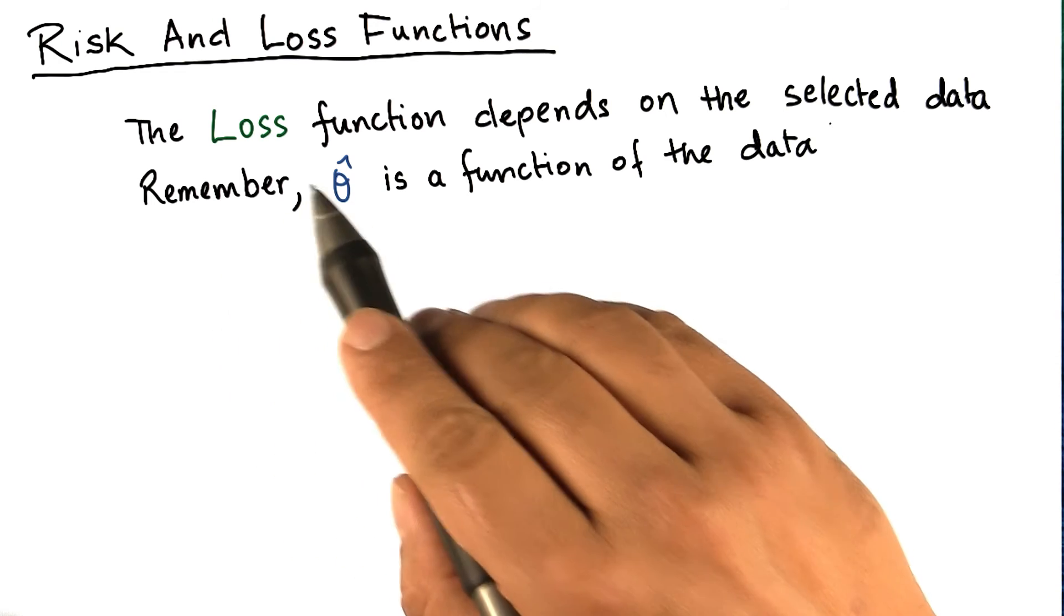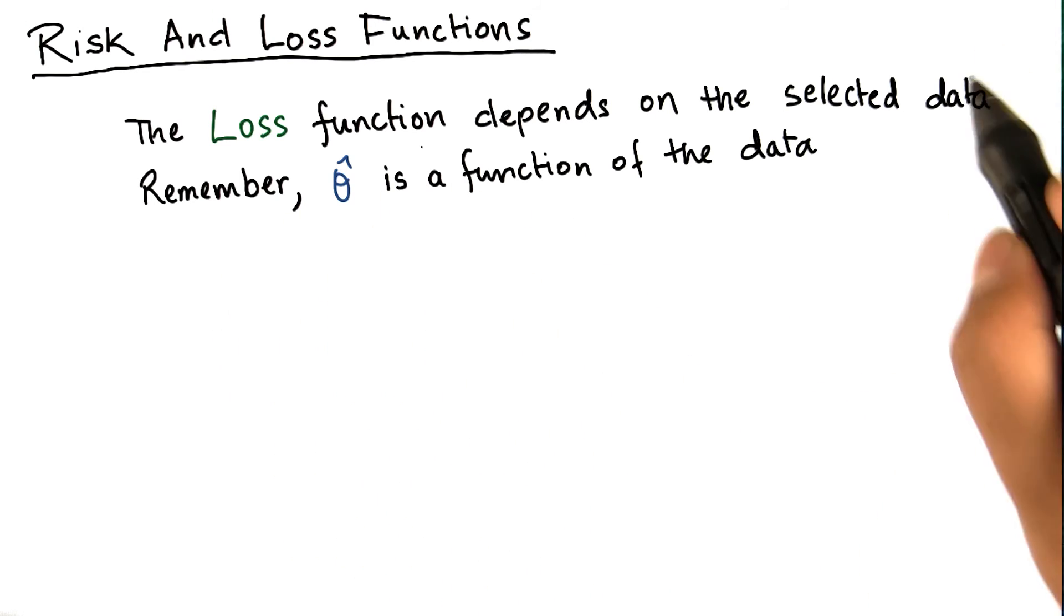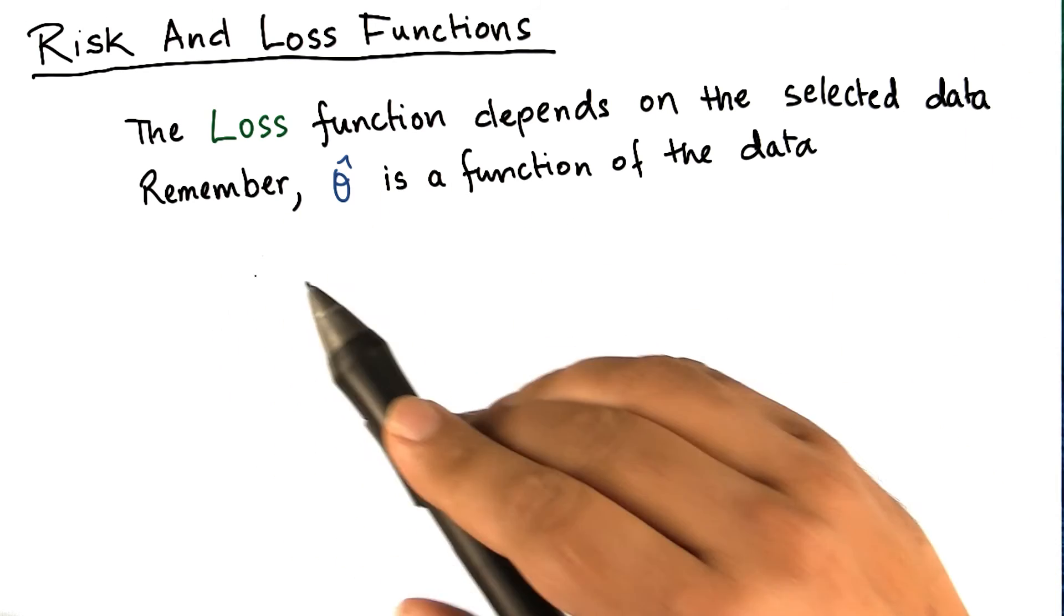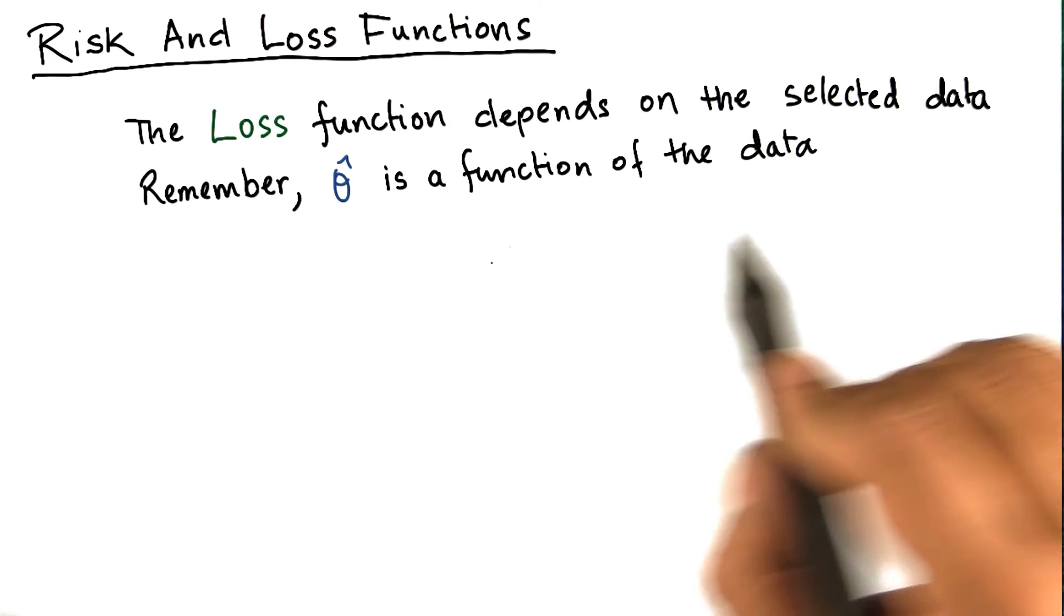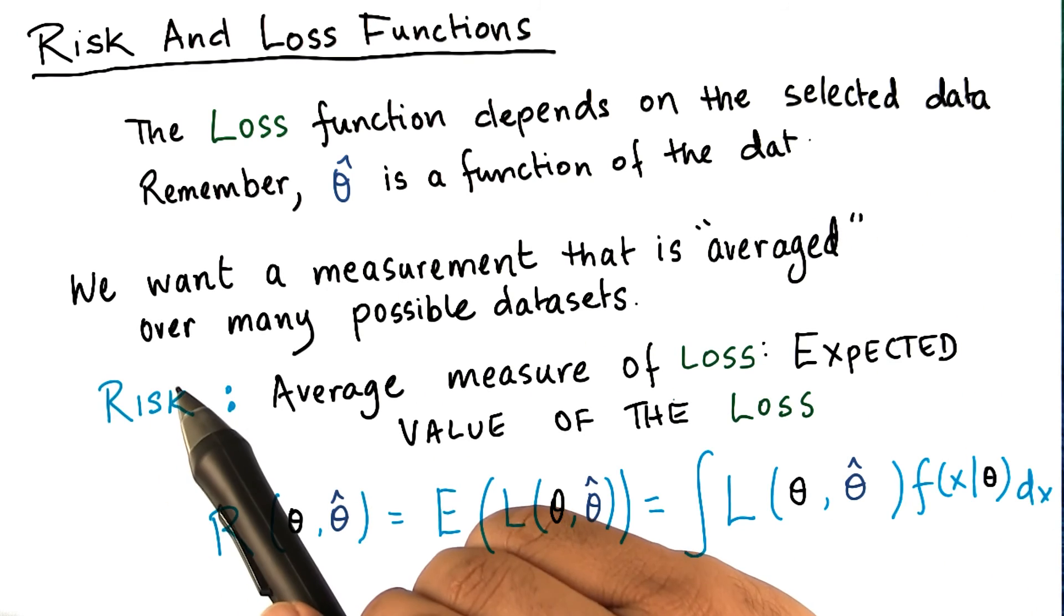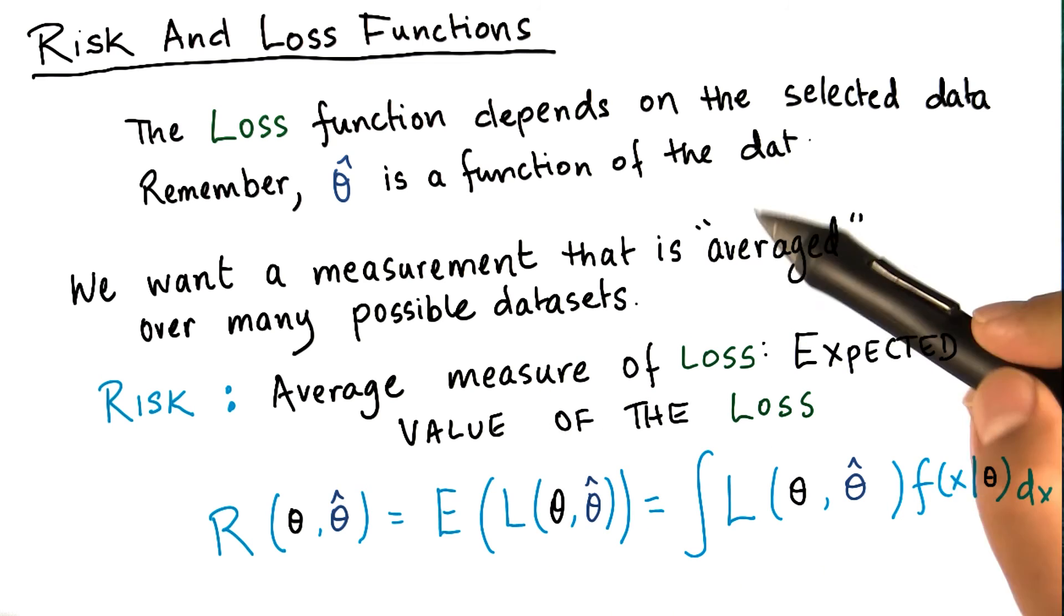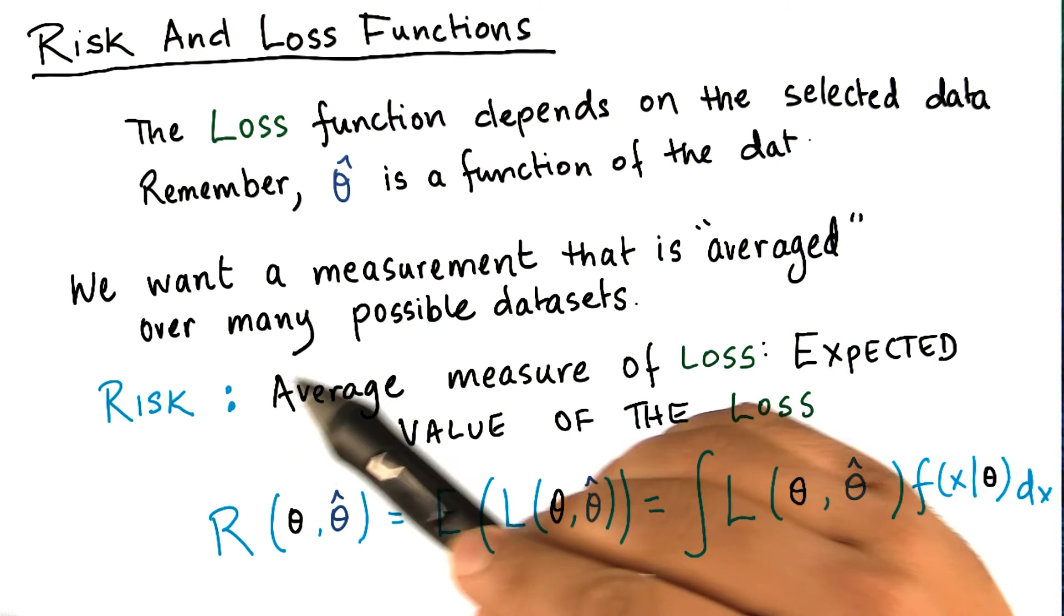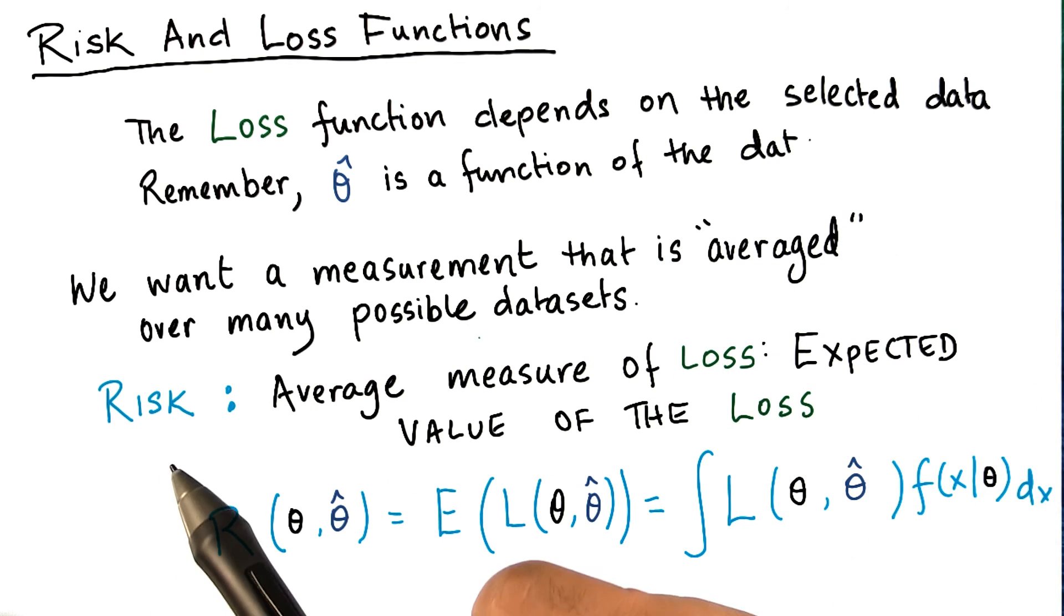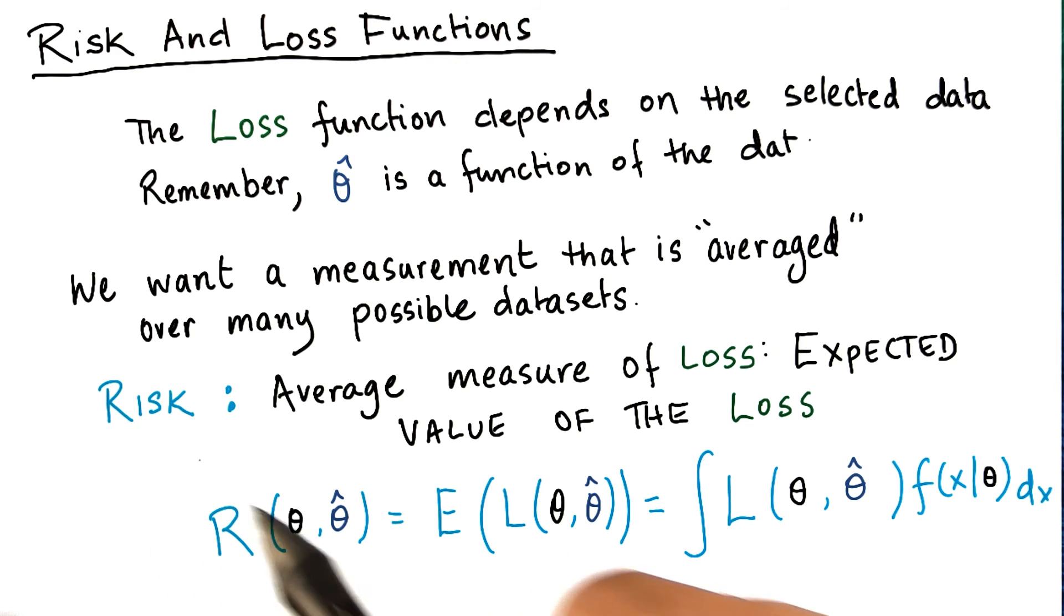We mentioned that the loss function depends on the selected data. Remember, theta hat is a function of the data. We want a measurement that is averaged over many possible data sets. The risk is such a function. It is an average measure of the loss.